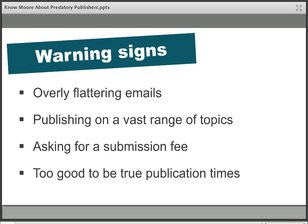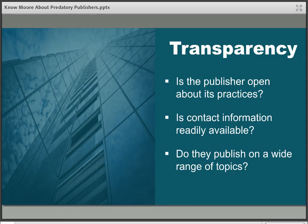Those are some key warning signs. Now here is a more practical checklist you can use if you have concerns about a particular publisher. Publishers should be really open about their practices in order to preserve the integrity of research. They should probably talk somewhere about their practices, philosophy, and reason for publishing in that particular area. If they're not giving you any of that kind of information, I would ask why and do a little bit more digging.